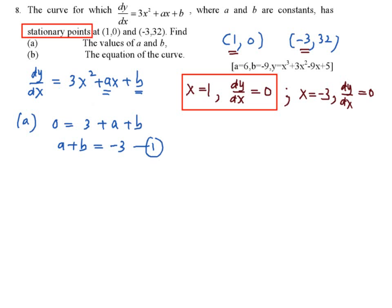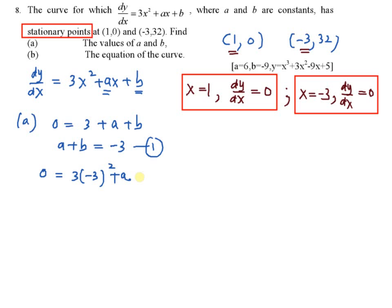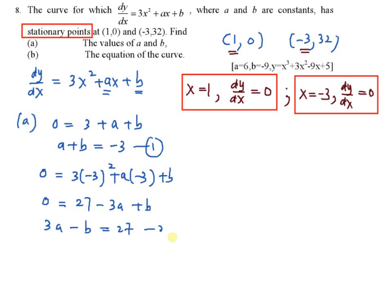For the second equation, substitute x equals negative 3 and dy/dx equals 0. So you have 0 equals 3 times negative 3 squared plus a times negative 3 plus b. That gives 0 equals 27 minus 3a plus b, meaning 3a minus b equals 27.